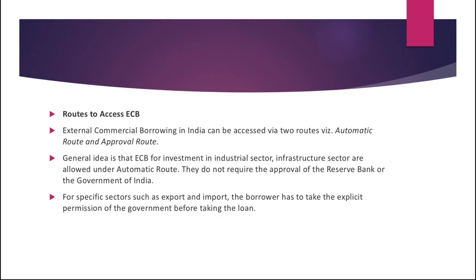What are the routes to access external commercial borrowing? ECB can be accessed via two routes: automatic route and approval route. ECB for investment in industrial and infrastructure sectors, including housing, is allowed under the automatic route and does not require approval from RBI or the government. For specific sectors such as export and import, the borrower has to take explicit permission from the government before taking such loans.